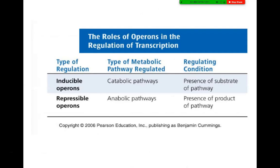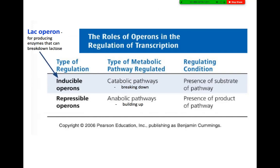Here is a quick summary: there are two types of operon — inducible and repressible. The inducible operon is involved in a catabolic pathway, where you produce enzymes necessary for breaking down substrates that are present, as in the case of the lac operon. The repressible operon is involved in an anabolic pathway, represented by the trp operon, where you are producing a protein molecule that your body needs continuously until your body cells recognize they have enough. This is how gene regulation occurs in prokaryotic cells.